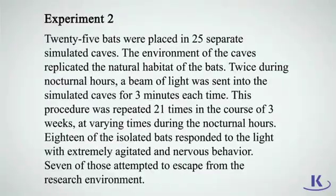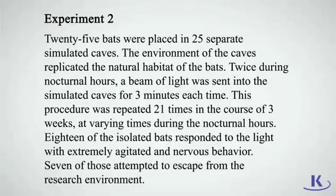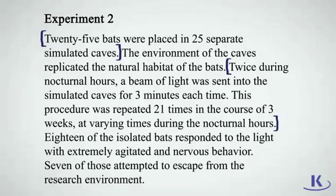Experiment two: 25 bats were placed in 25 separate simulated caves, replicating their natural habitat. Twice during nocturnal hours, a beam of light was sent in for three minutes, repeated 21 times over three weeks at varying times. Eighteen of the isolated bats responded to the light with extremely agitated and nervous behavior, and seven of those attempted to escape from the research environment. The method was identical to experiment one but with bats isolated individually, and the results showed 18 bats agitated and 7 attempting to escape.